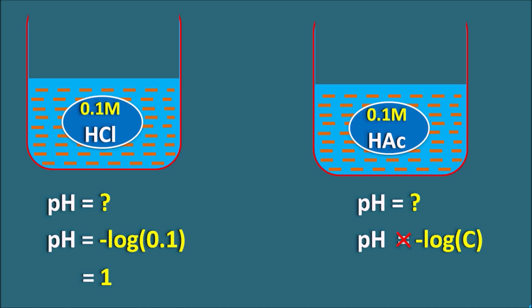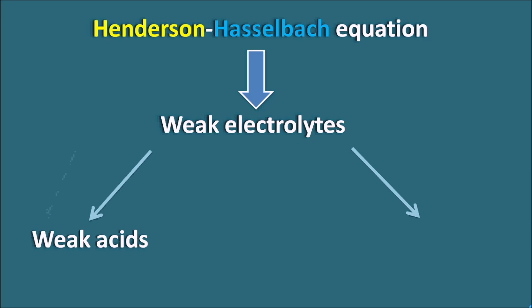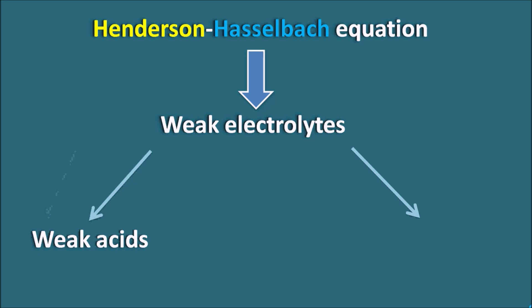In this situation the Henderson-Hasselbalch equation plays a key role. The Henderson-Hasselbalch equation gives a relation between the pH of the solution, the dissociation constant of the weak acid, and the concentrations of both the ionized and unionized forms. This equation is applicable for weak electrolytes, which may be either weak acids or weak bases.